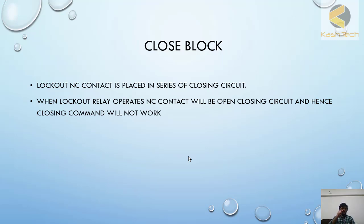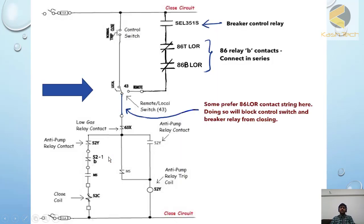You can see here the two lockouts are in series. When lockout will operate, both circuits will become open. If there are five lockouts, five lockout contacts you have to put in series. If any one of the lockout operated, the breaker cannot be closed.